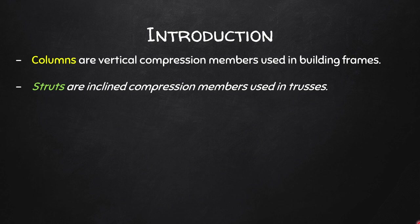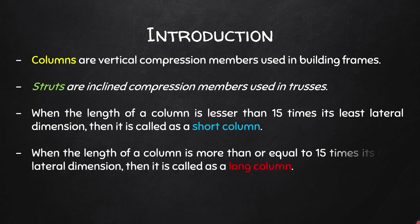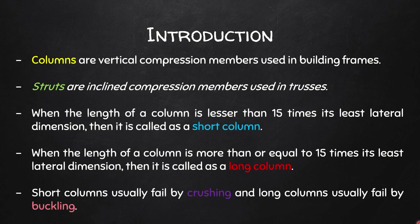Let me give you the definitions of a long column and a short column. When the vertical length of the column is less than 15 times its least lateral dimension, it is called a short column. When the vertical length is greater than or equal to 15 times its least lateral dimension, it is called a long column. Generally, short columns fail in crushing and long columns fail by buckling, but practically most columns fail by a combination of both.